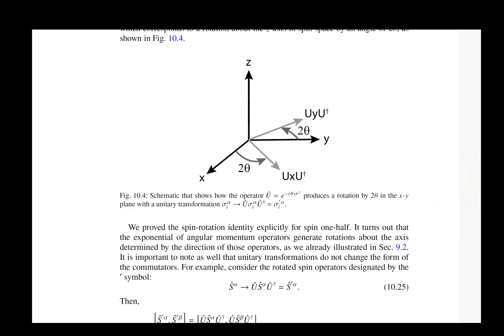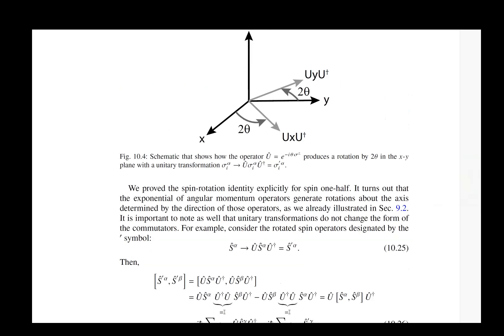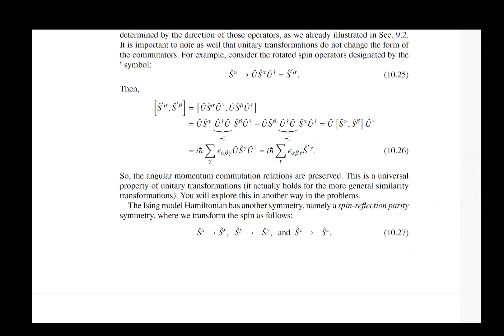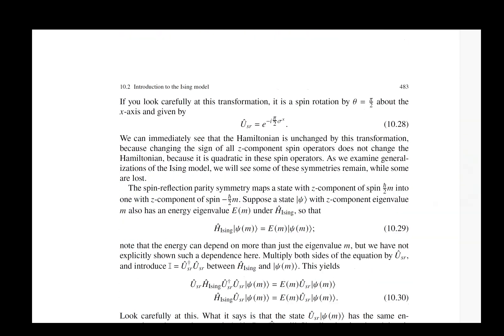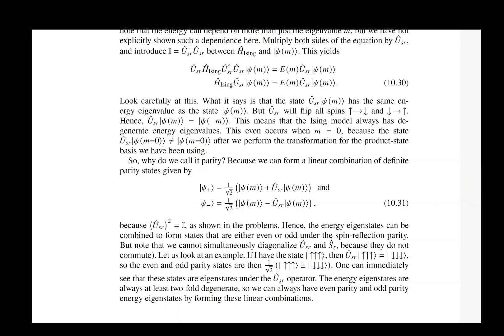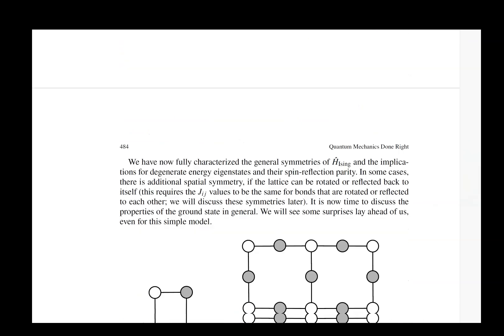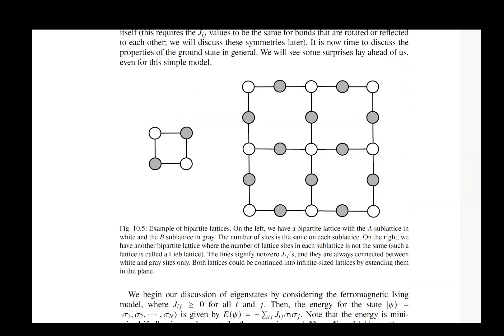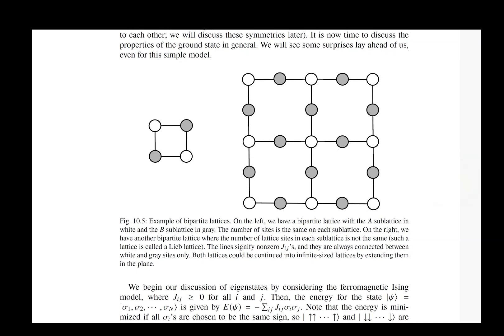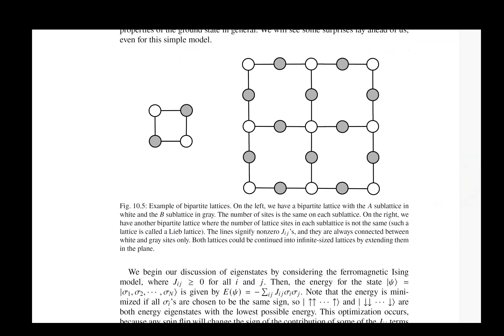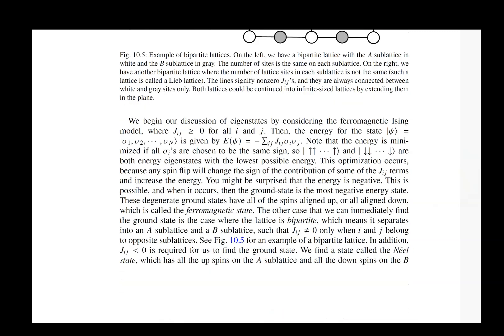We look at some of the different symmetries that the Ising model has and the consequences of those symmetries. We look at interesting kinds of lattices. These are called Lieb lattices. Well, the one on the right is a Lieb lattice. They're bipartite lattices because the lines only connect the white and the gray sites. Bipartite lattices play an important role in a number of the things we'll do in the book.